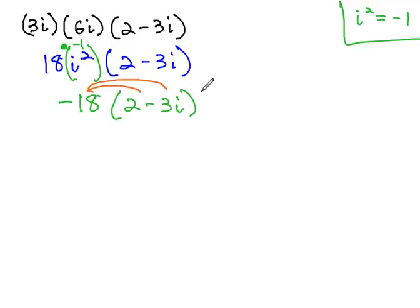Negative 18 times 2 is negative 36, and negative 18 times negative 3i is positive... nope, not 27...54, sorry...54i.